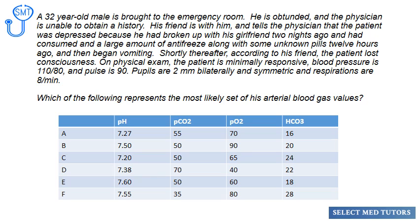On physical exam, the patient is minimally responsive. Blood pressure is 110 over 80 and pulse is 90. Pupils are 2 millimeters bilaterally and symmetric, and respirations are 8 per minute. Which of the following represents the most likely set of his arterial blood gas values?